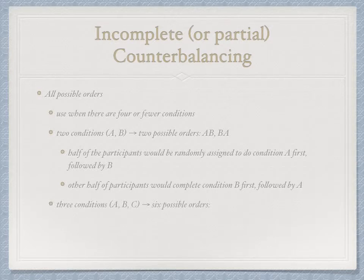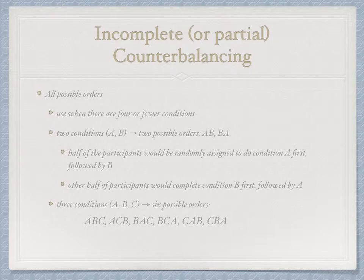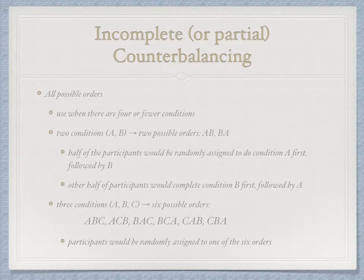With three conditions, there are six possible orders. Divide your group into six: one sixth participates in A-B-C, one sixth in A-C-B, one sixth in B-A-C, one sixth in B-C-A, one sixth in C-A-B, and one sixth in C-B-A. We equally and randomly assign participants to one of the six orders, with equal numbers in each, balancing practice effects across the entire experiment — not within each participant, but across participants. With four conditions we're up to 24 orders, and five conditions gives 120 orders, which is why all possible orders is really only used with four or fewer conditions.